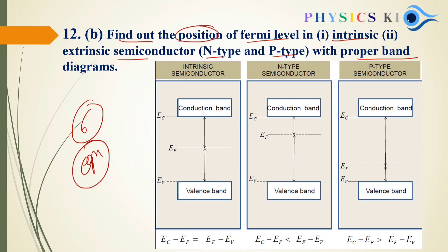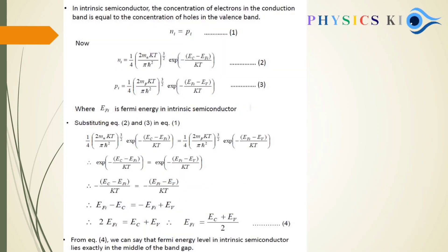For the diagram: conduction band on top, valence band below. In an intrinsic (pure) semiconductor, the Fermi level is exactly in the middle. For N-type, since electrons are more, the Fermi level is near the conduction band. For P-type, since holes are more, the Fermi level is near the valence band.